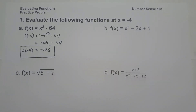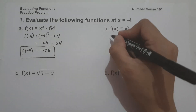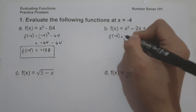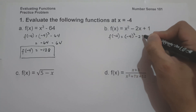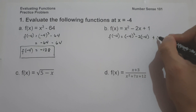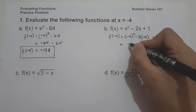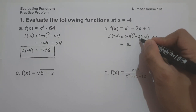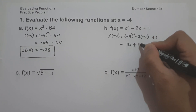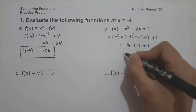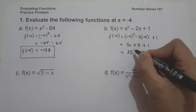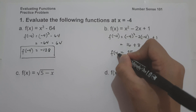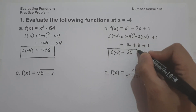On letter B, we have f of x is equal to x squared minus 2x plus 1. So f of negative 4 will be negative 4 raised to 2 minus 2 times negative 4 plus 1. Negative 4 raised to 2 is positive 16. Negative 2 times negative 4 is positive 8, plus 1. So 16 plus 8 plus 1 is 25. This will be the value of f of negative 4, so this will be our answer.